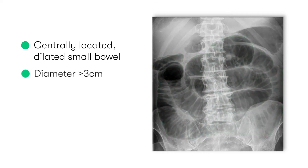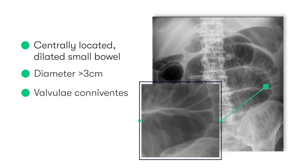We can tell that these loops of bowel are in fact small bowel rather than large bowel due to the presence of valvulae conniventes, which are near-circumferential folds of mucosa visible as lines that traverse the diameter of the bowel.